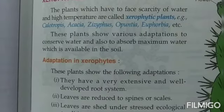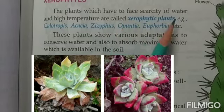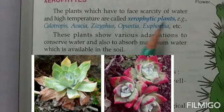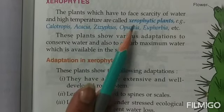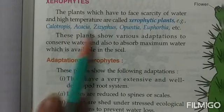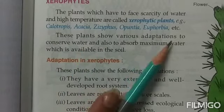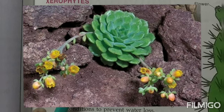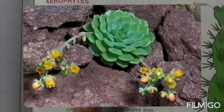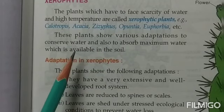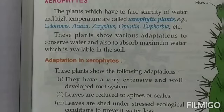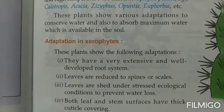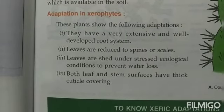Coming to the next type — xerophytes. These are plants that face scarcity of water, found in places where there is less water and temperature is generally high. Examples include Caltropis, Acacia, and Opuntia. These plants show various adaptations to conserve water. Because they live where there is little water and high temperature, they have adaptations to conserve and save water, absorb the maximum water available in the soil, and store that water in the plant body.